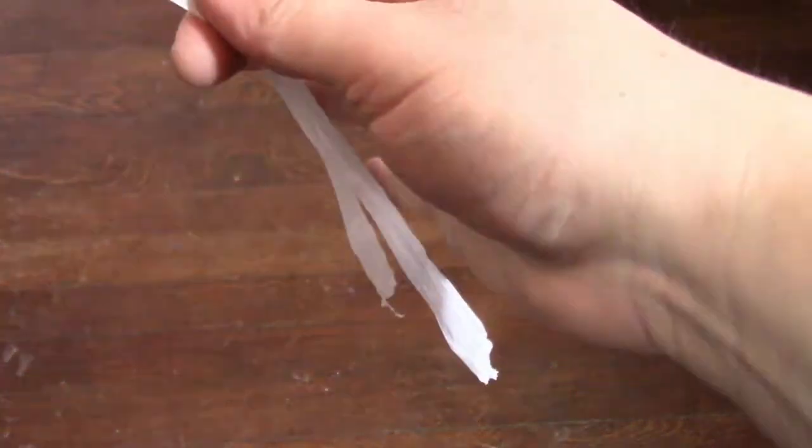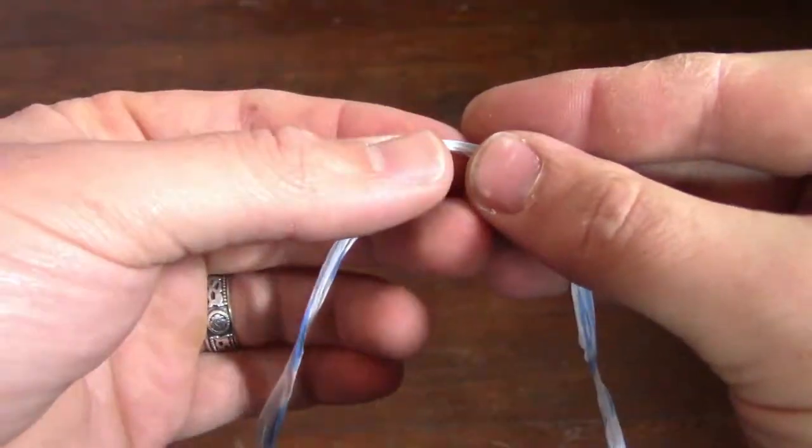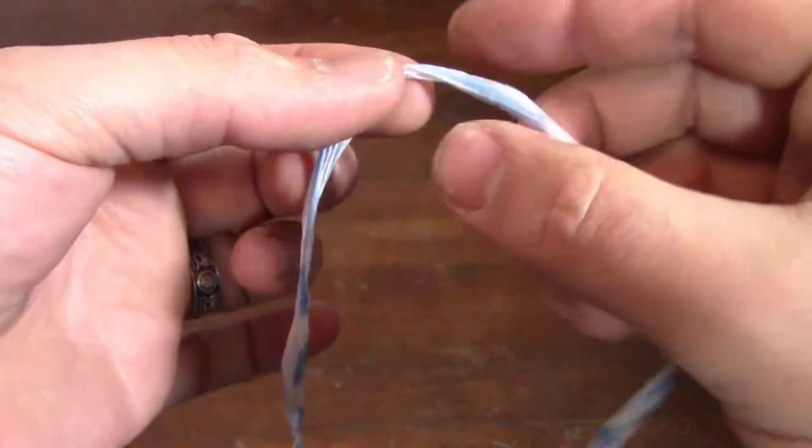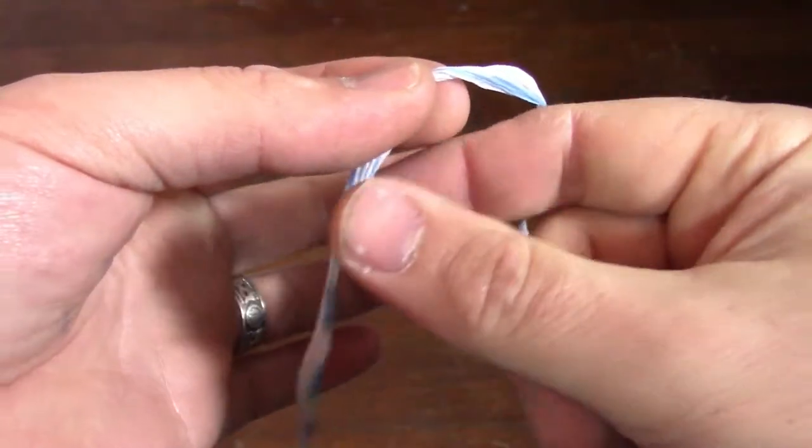You can see these two ends are different lengths. That's what we want. We want to stagger those. We don't want them to be the same length. That's going to help us out later. I'm just going to pinch that between my thumb and my index.